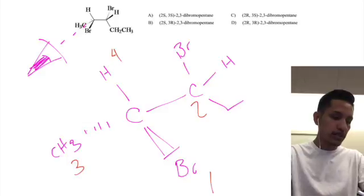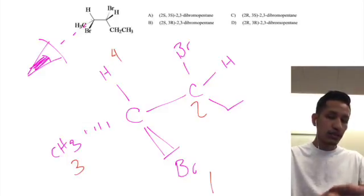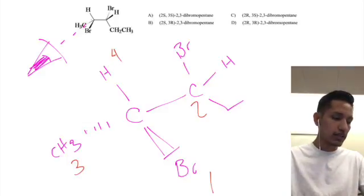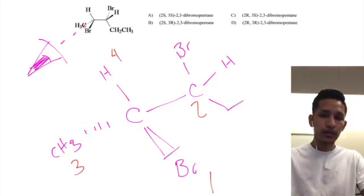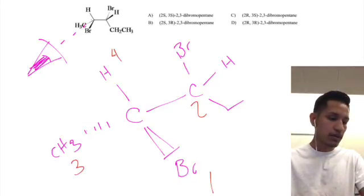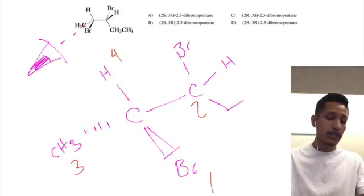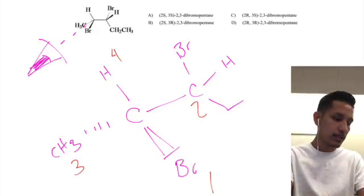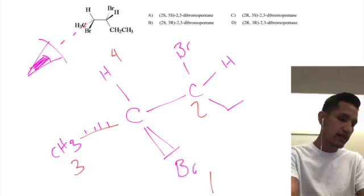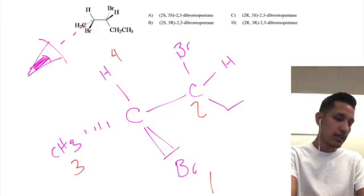The next thing we're going to want to do — and this is where it gets a little tricky — is we're going to want to put our fourth priority, which in this case is hydrogen, going away from us. So we're going to replace the compound that is currently going away from us, which would be this methyl, with the hydrogen.